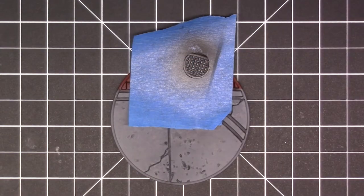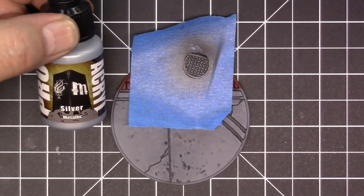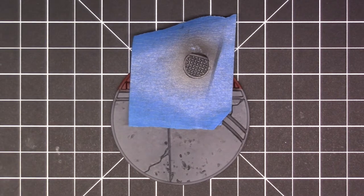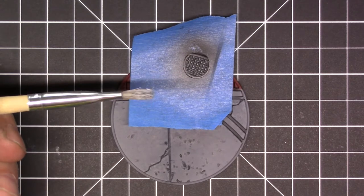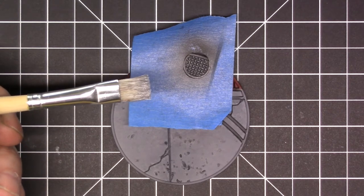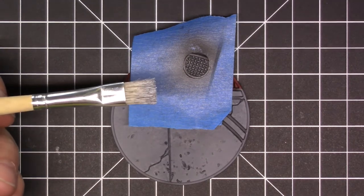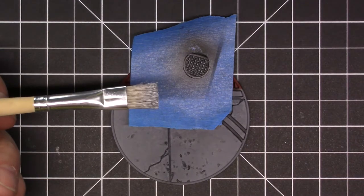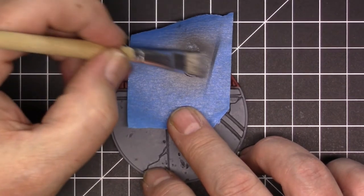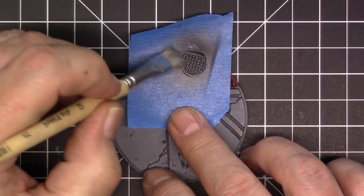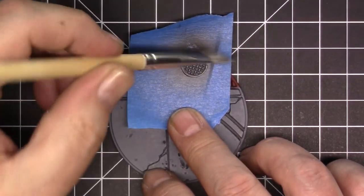I'm dry brushing the manhole cover using the silver. This is a hog hair brush, it's a cheap brush, but you get more of a scratchy dry brush because it's hog hair, it's not as fine as a sable hair. Wiped off most of it and then just go over and hit the high spots. Looks good.